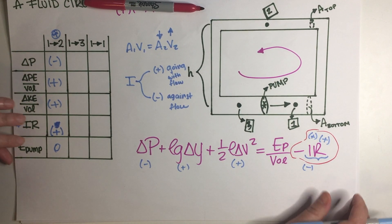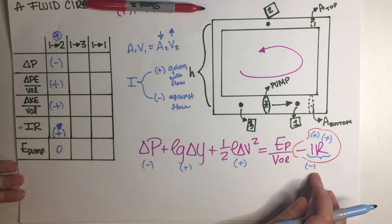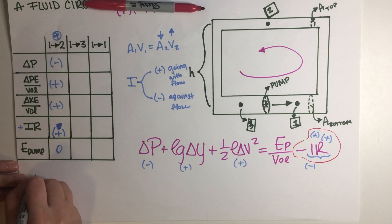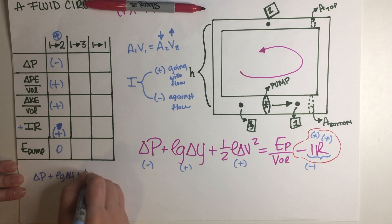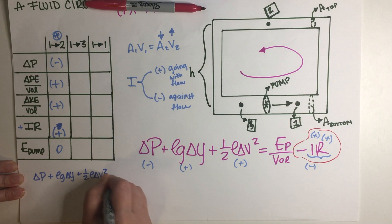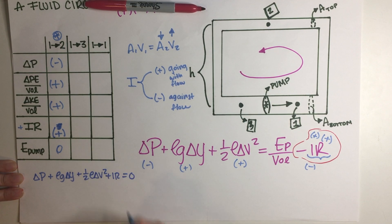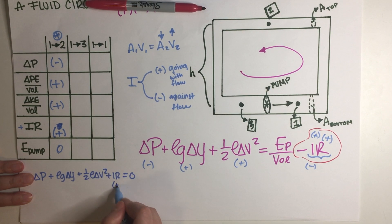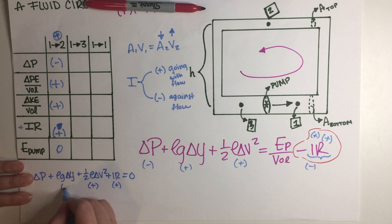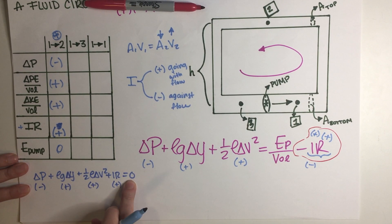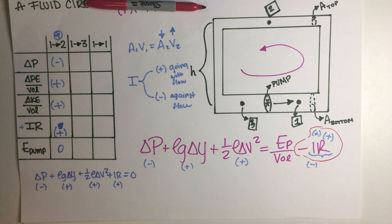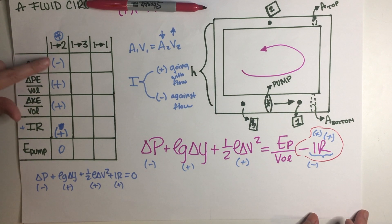Another way to look at it honestly is if you just make everything equal to zero then you will have ΔP + ρgΔy + ½ρΔv² + IR is equal to zero. This is positive, this is positive, this is positive, so this has to be negative if it's going to be equal to zero because we don't have a pump over here. So yeah, delta P has to be negative.